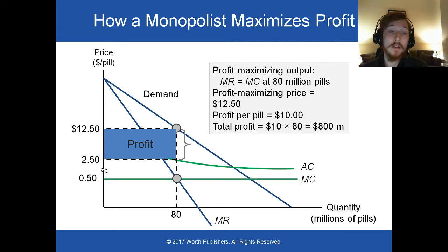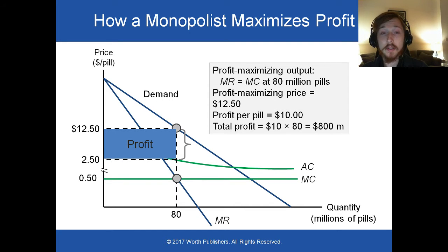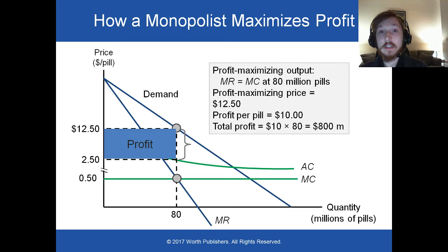While in perfect competition firms make zero profit in the long run, a monopolist can continually make very, very large economic profits.